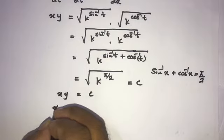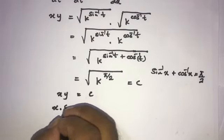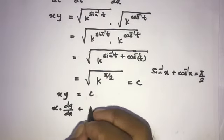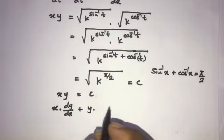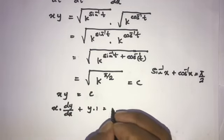First rewrite the first function and derivative of the second function: x times dy by dx, plus the second function times the derivative of the first, y times 1, equals 0.